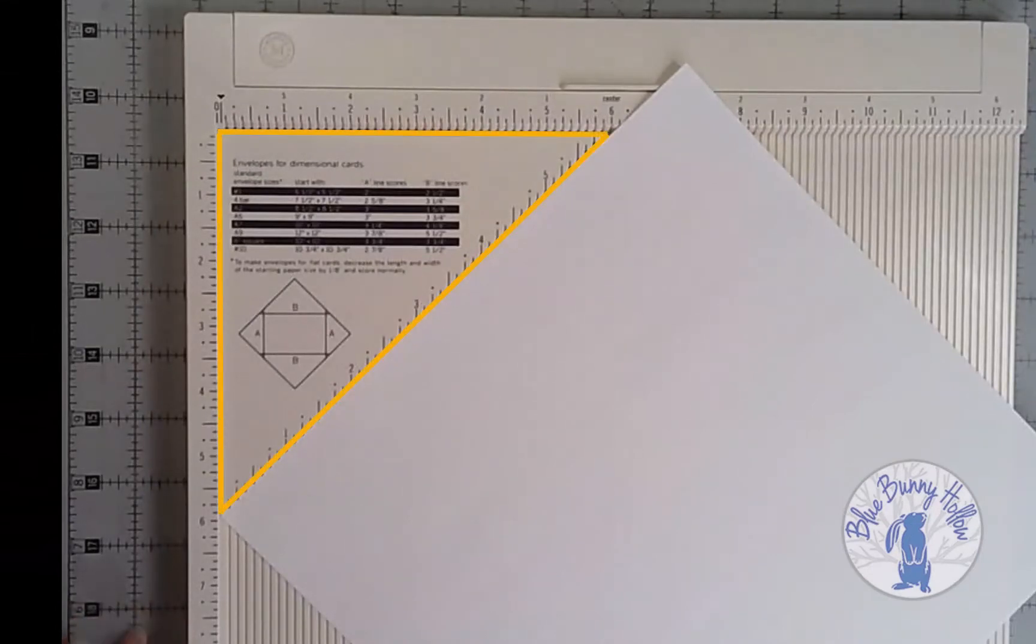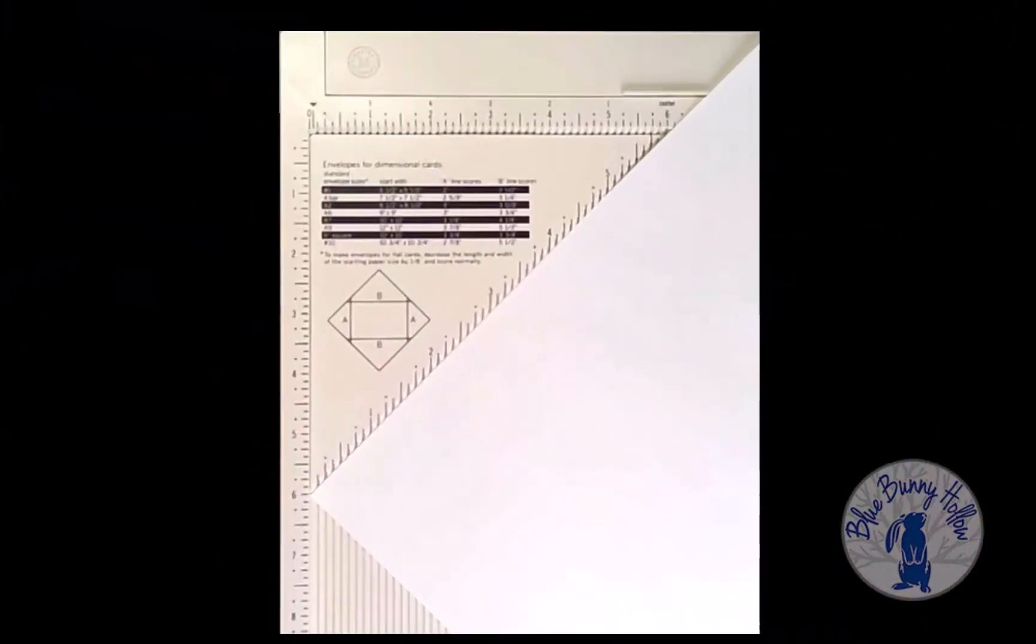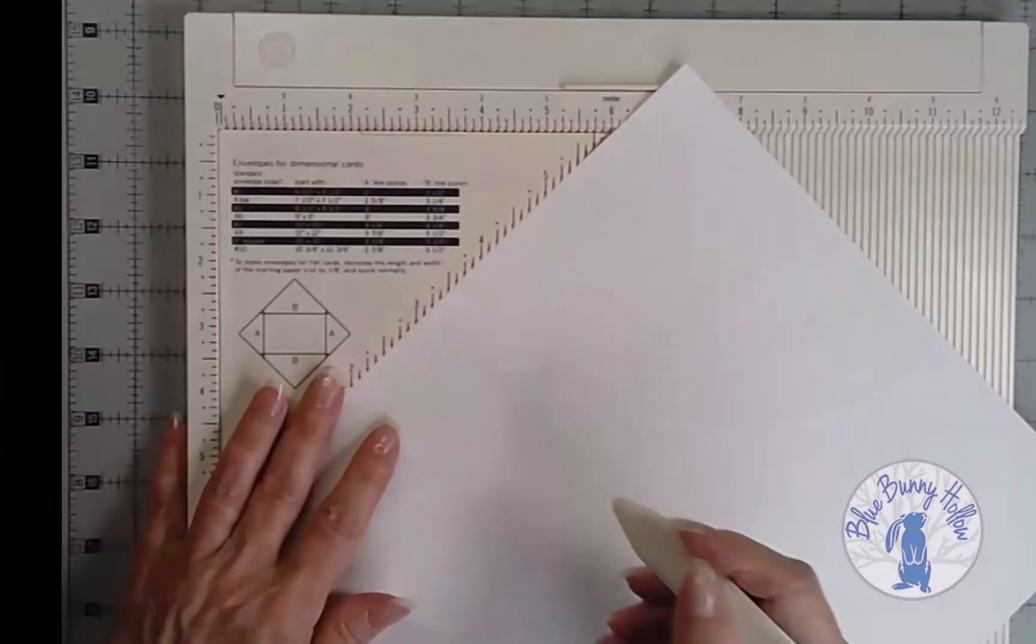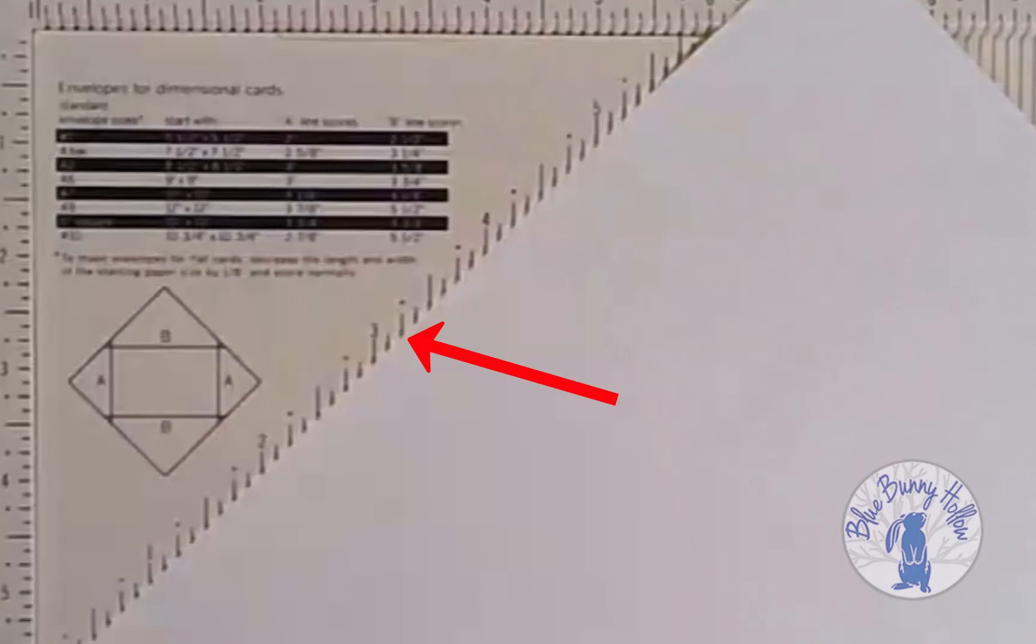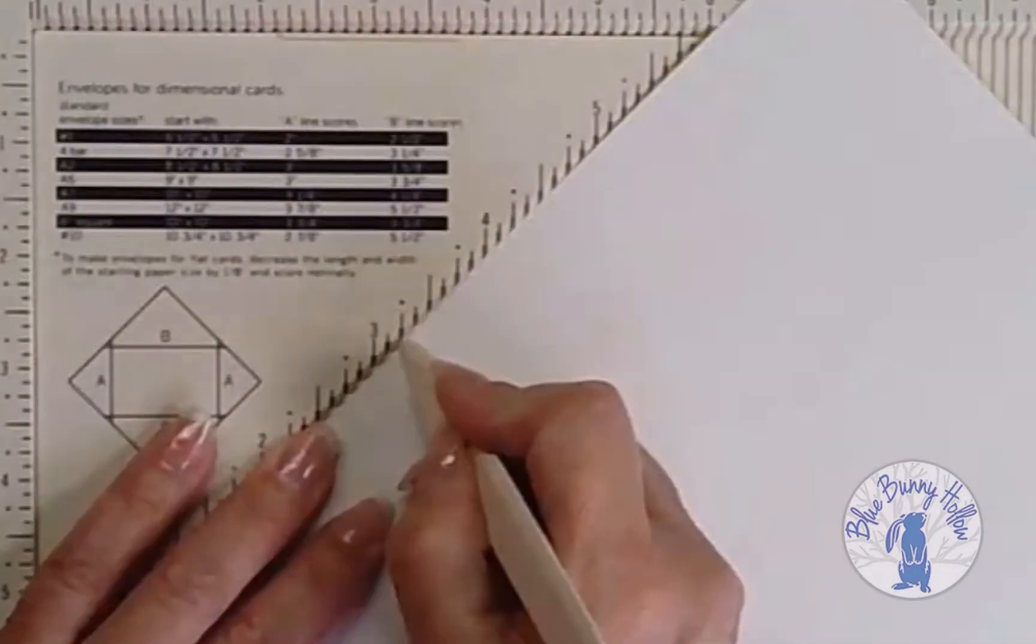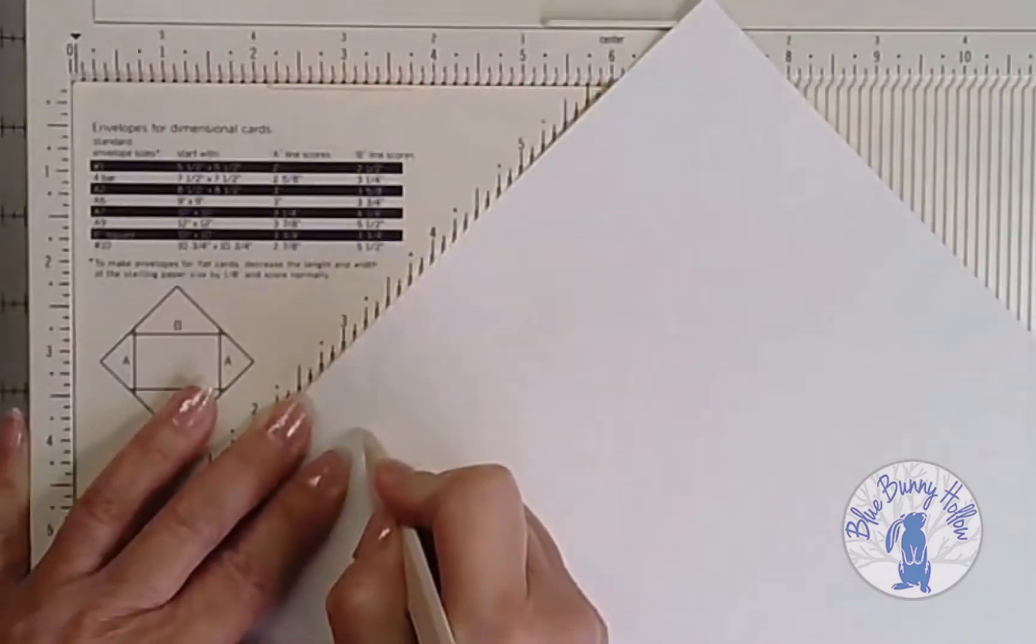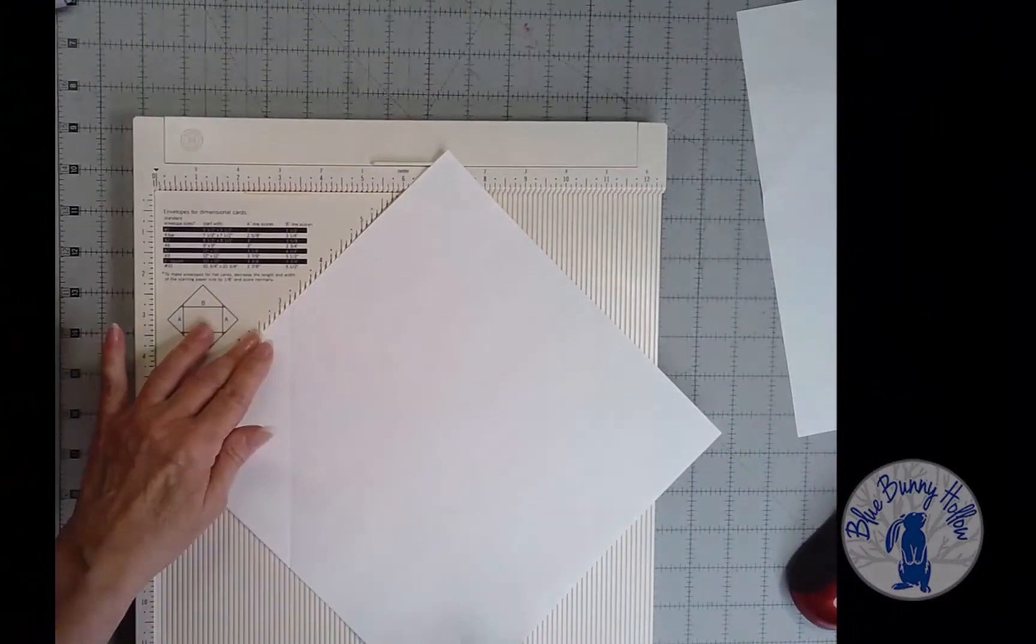Place the envelope guide in the upper left corner of the scoring board. Then place the paper along the edge of the guide, ensuring that the left corner of the paper touches the right side of the ruler. The guide says to make the small triangles three and a quarter inches. Find three and a quarter inches on the envelope guide and run the bone folder straight down the indented line.